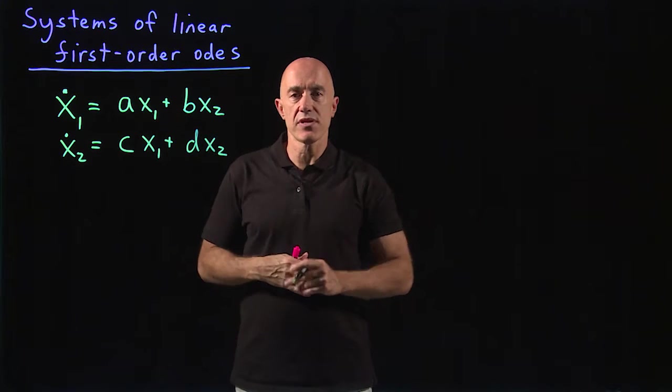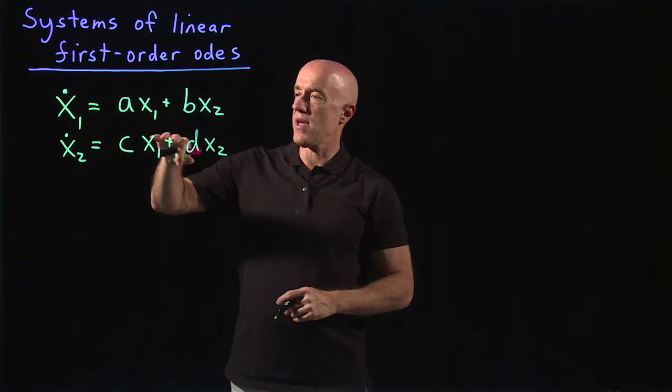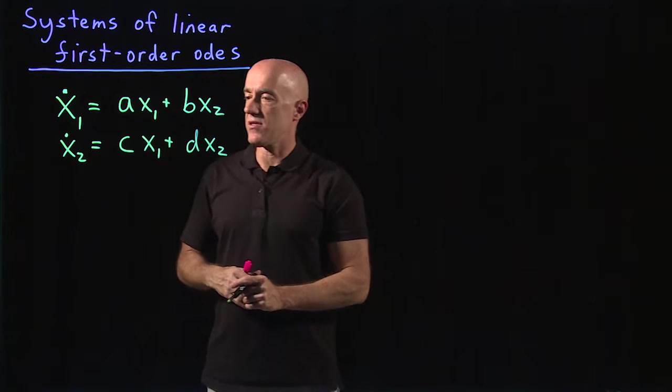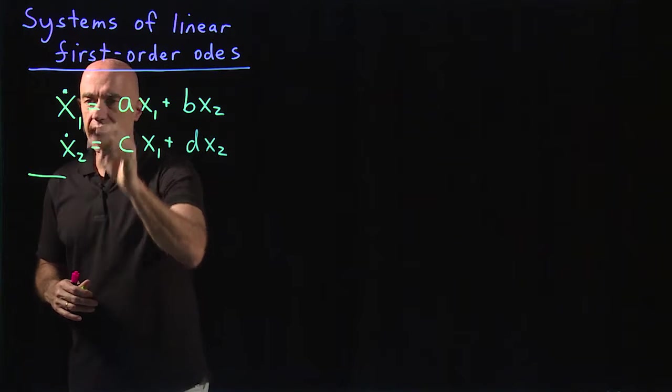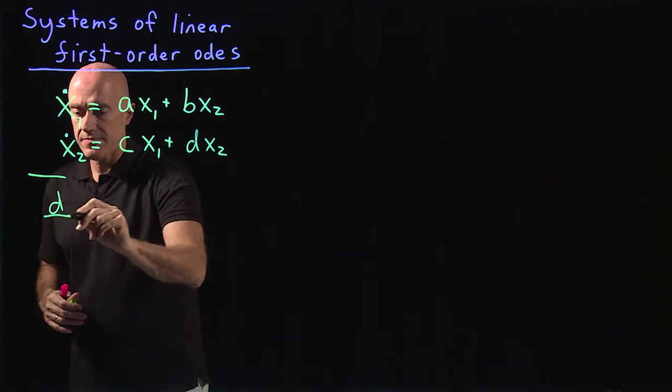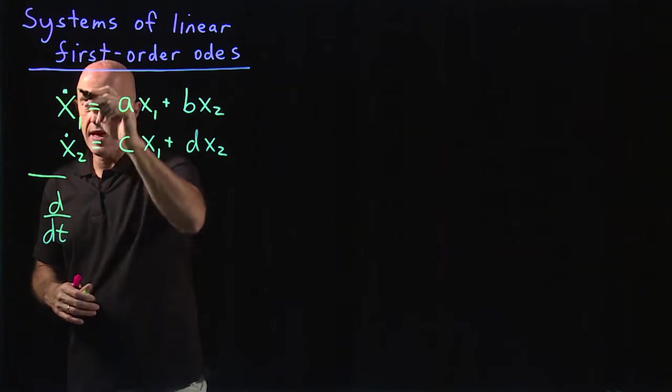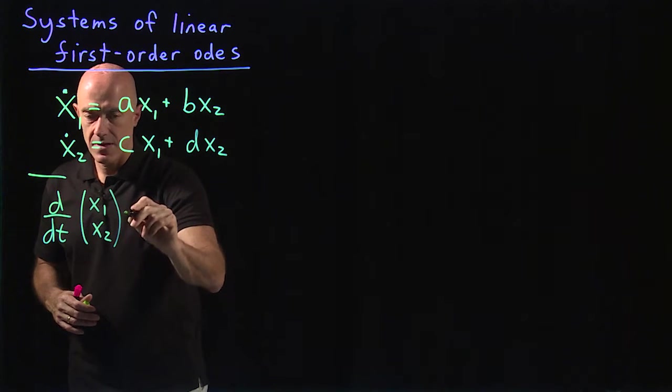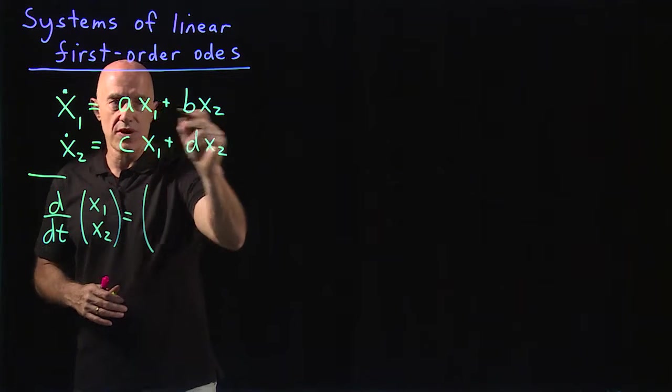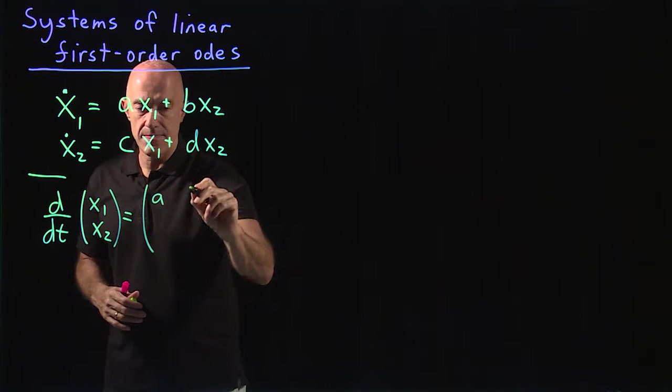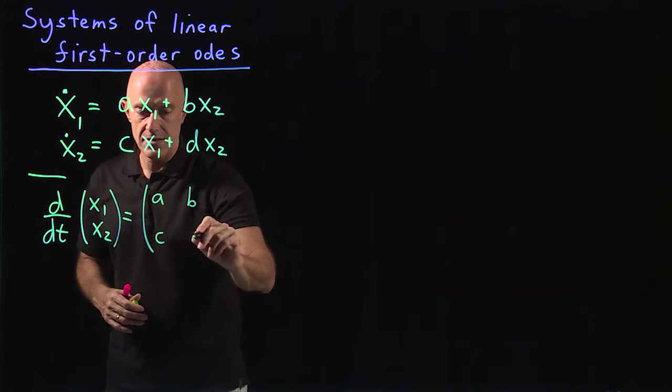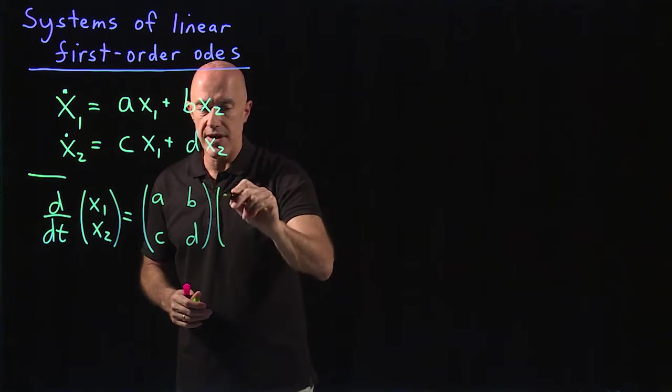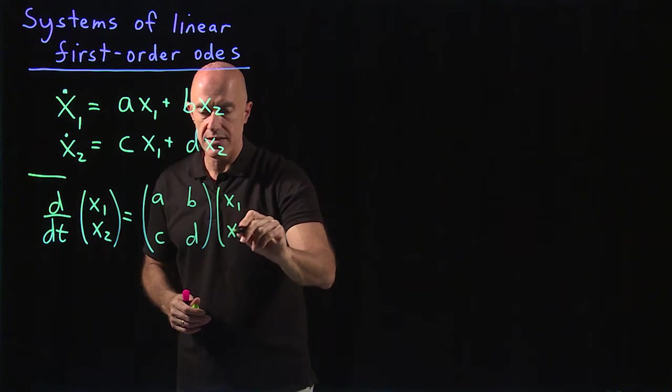If you know your matrix algebra, you know that you can write this in matrix form. What would that look like? We've got d/dt, and then we put x1 and x2 in a column vector. And that's equal to a matrix with entries a, b, c, d, which is the standard 2 by 2 matrix, times the column vector x1, x2.